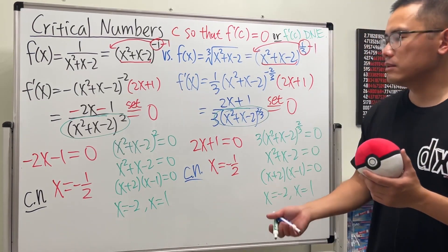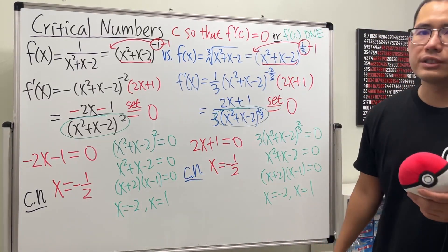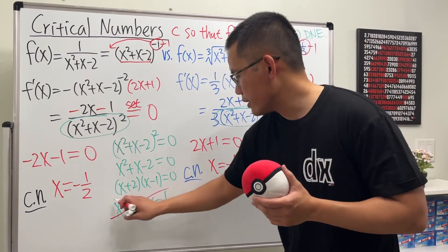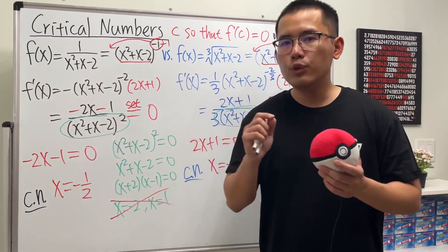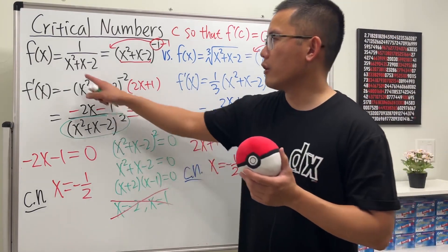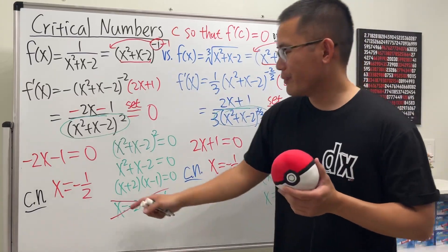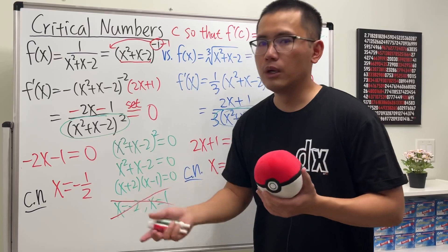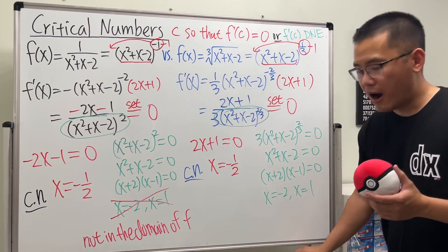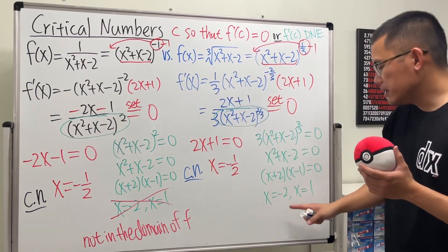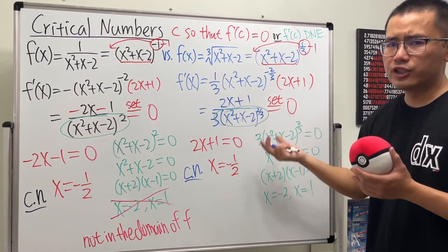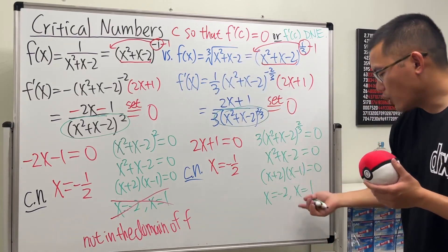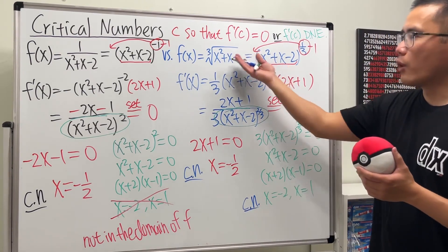They have the same answers — negative 1/2, negative 2, and 1 — but actually for the first function we didn't need to do this at all. Negative 2 and 1 are not in the domain of the original first function, so they are not critical numbers for it. However, negative 2 and 1 are in the domain of the second (cube root) function: plugging them in gives the cube root of zero, which is legitimate.